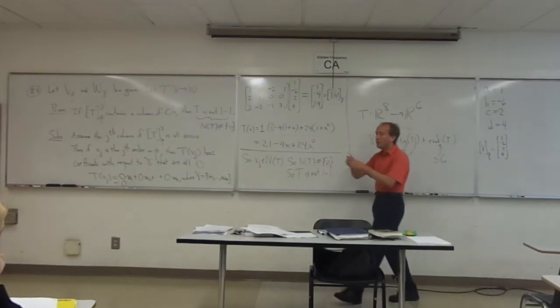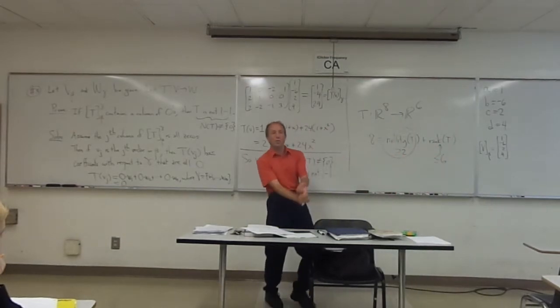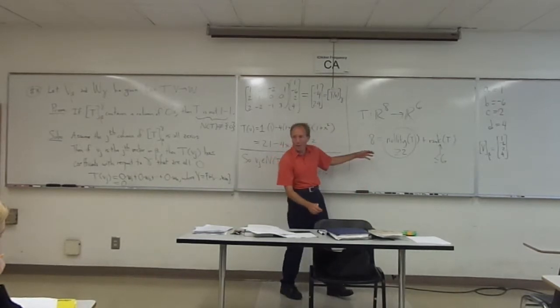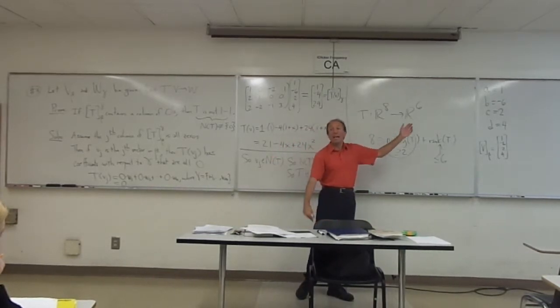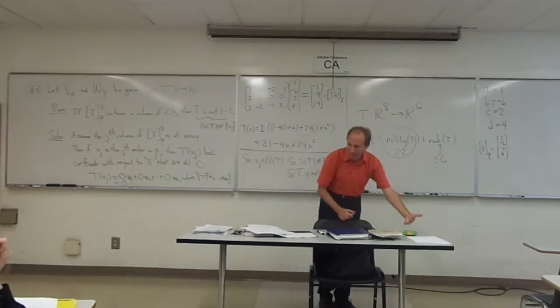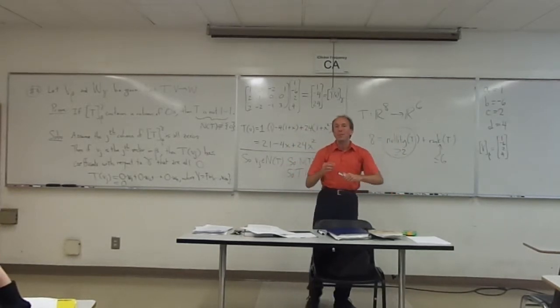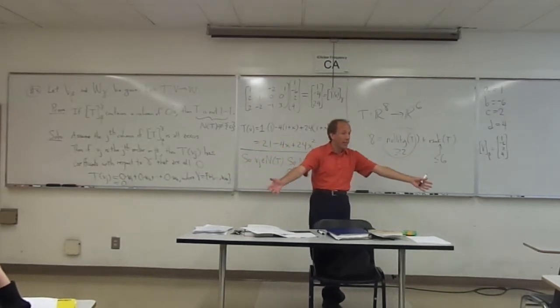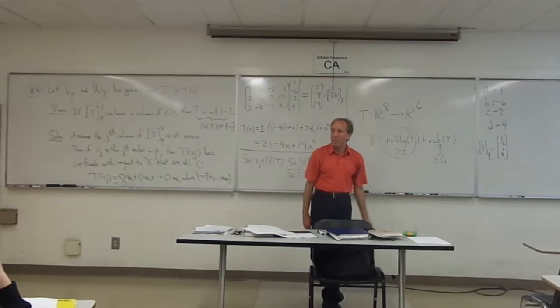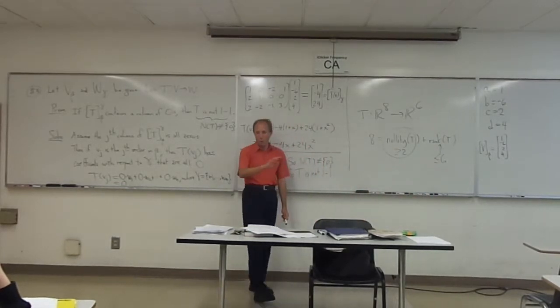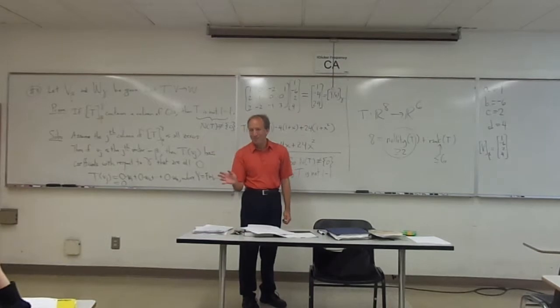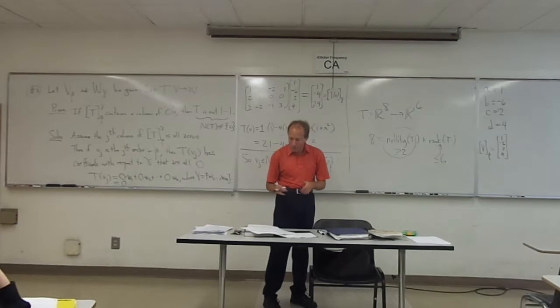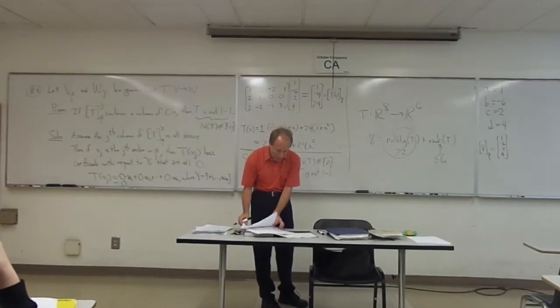Okay. So, the rank-nullity theorem is used for quick negative justifications on the one-to-one onto issue. The Annan's consequences are used for quick negative justifications on whether something can be linearly independent or spans the space, by giving you a set of vectors. Right? It's hard to draw positive conclusions, though, quickly. Generally, you have to do some work to really show that. But for negative conclusions, it's not so bad.